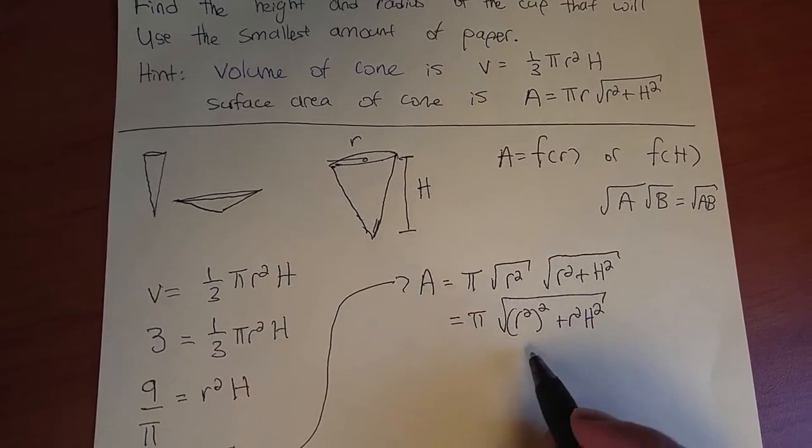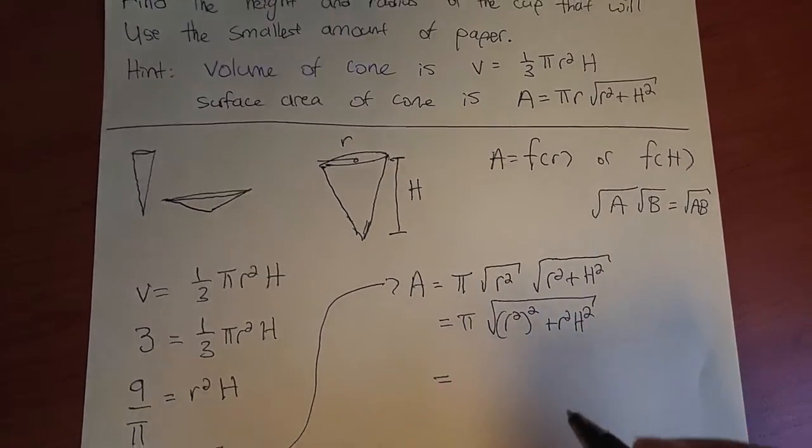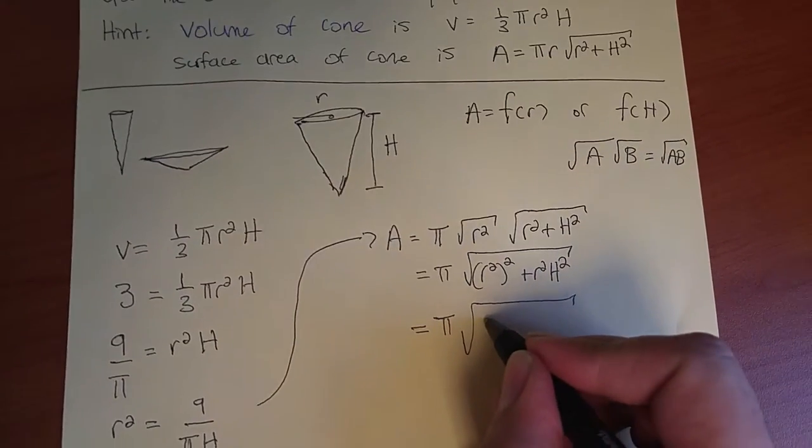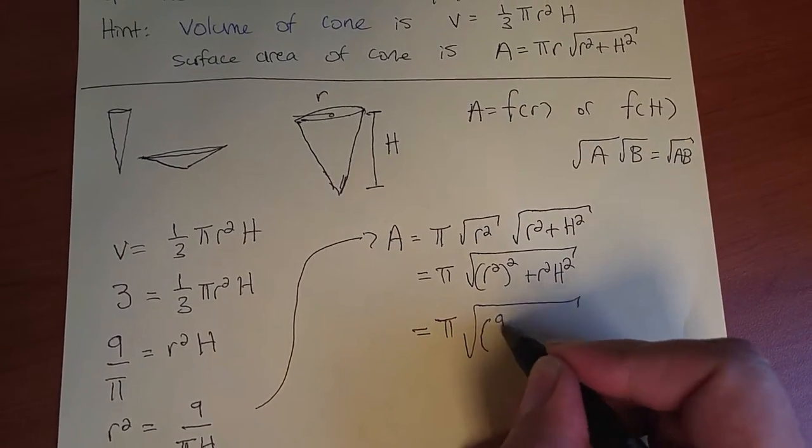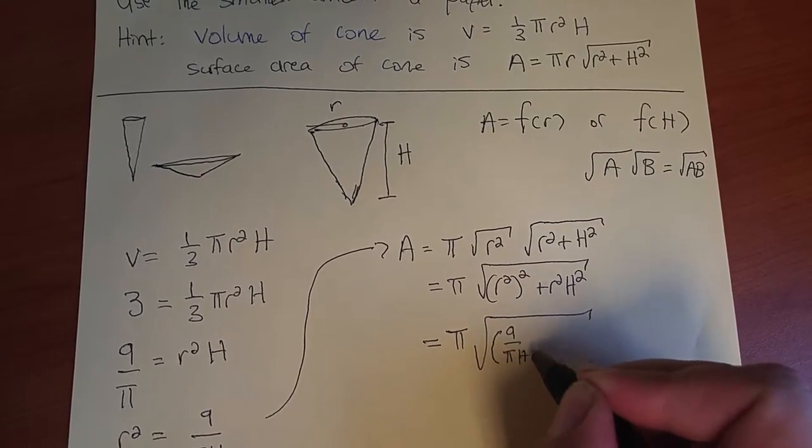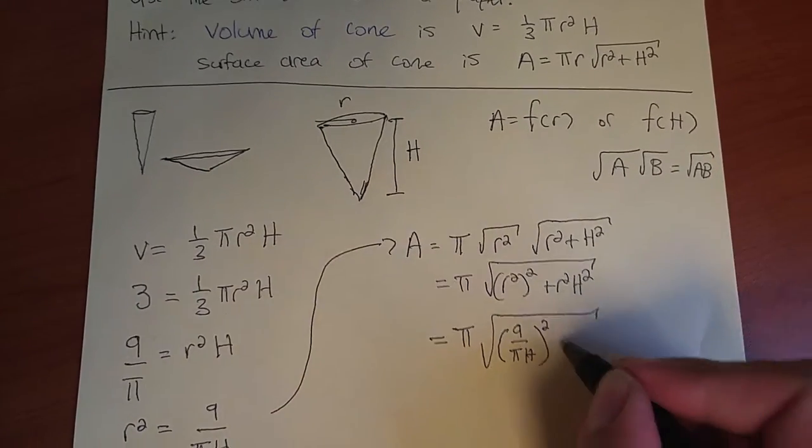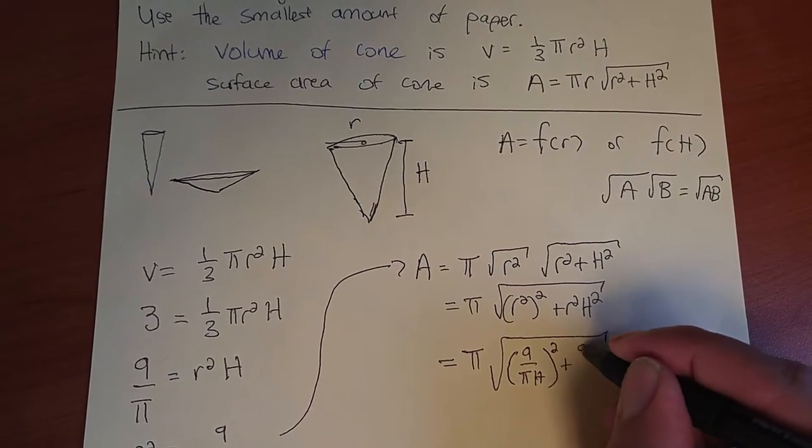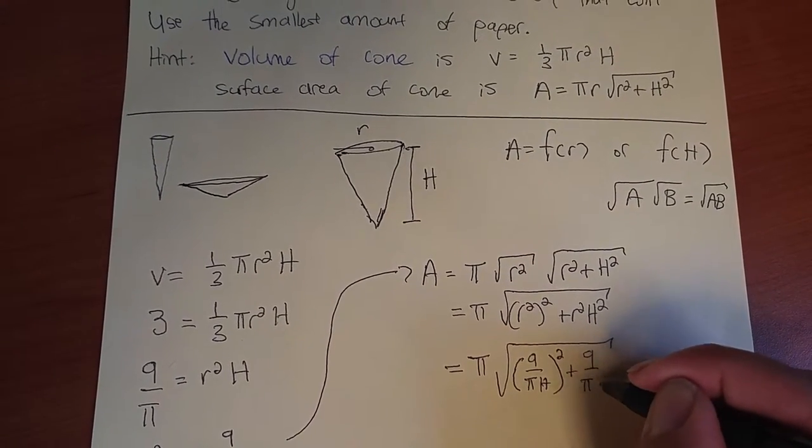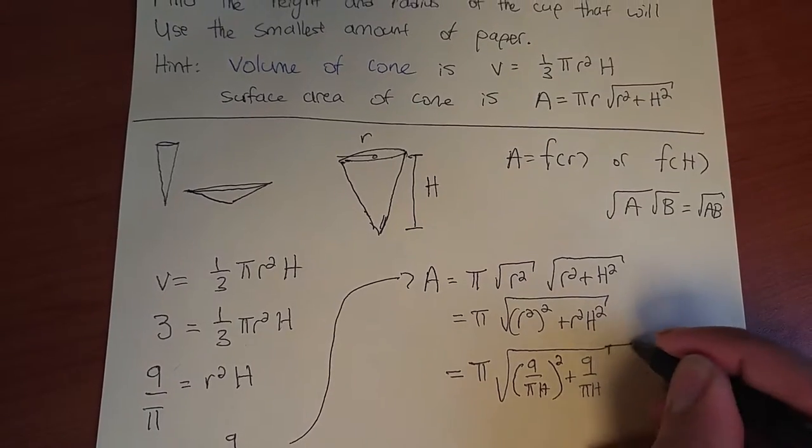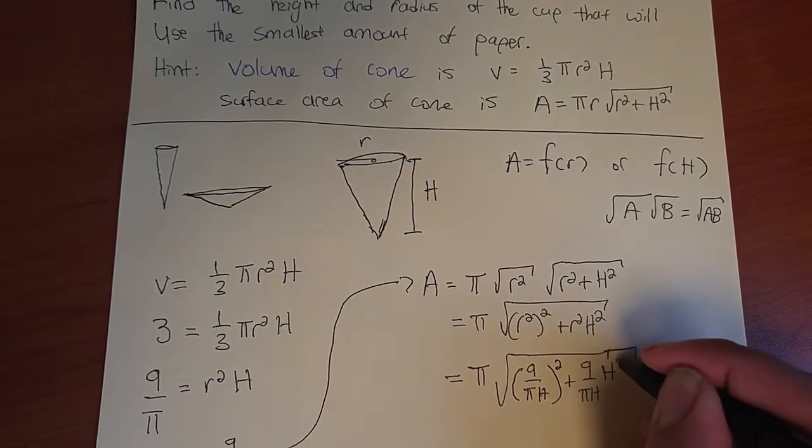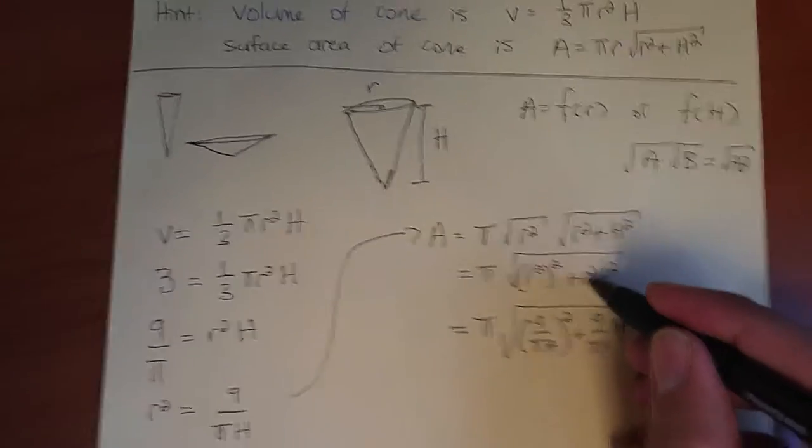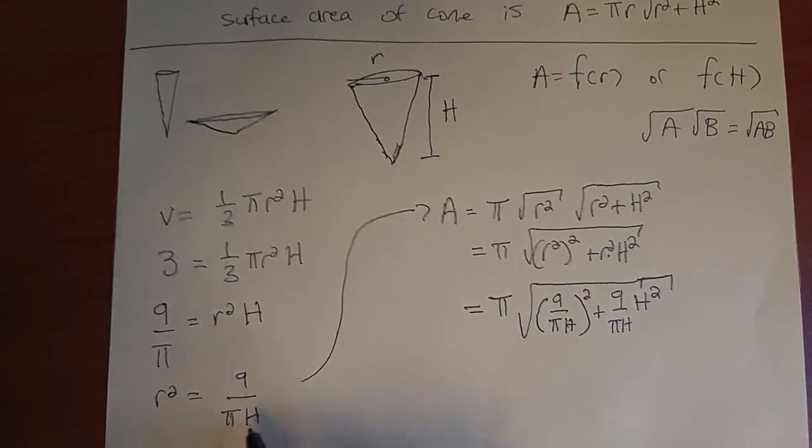Now we'll substitute our value for r² in terms of h. So we have π√[(9/(πh))² + (9/(πh)) · h²].